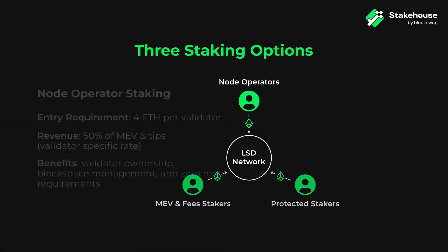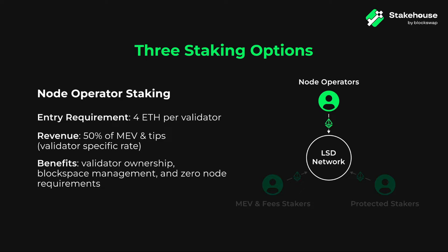The first option is node operator staking. This is the perfect option for Ethereum home stakers, as it only requires a minimum investment of 4 ETH to stake a validator in an LSD network. In return, you receive the keys to the validator and 50% of the MEV and tips that it generates. As the node operator, you also have the ability to manage the validator's block space and optimize its MEV performance. There are no node requirements, so you can set up your own RPC endpoints and run any node client or hardware that you want. In other words, you have complete autonomy.